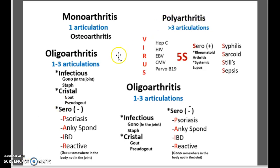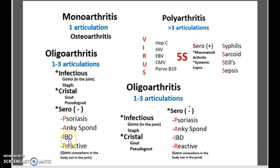For each one, you're going to be dealing with sub-diseases. For oligoarthritis, when it's infectious, you're going to be dealing with gonorrhea or staph. If it is crystal, then you're dealing with gout or pseudogout. If it is seronegative, then you're dealing with the acronym PARR, which is either reactive, ankylosing spondylitis, IBD, and psoriasis. When you're dealing with polyarthritis, the viruses you can possibly get are hepatitis C, HIV, EBV, CMV, and parvo B19.